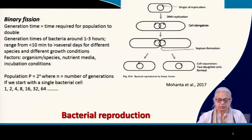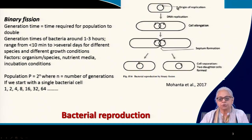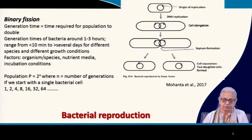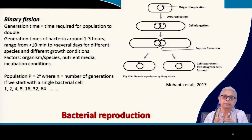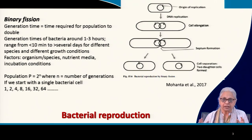We are going to start with bacterial reproduction. We already know that bacteria reproduce by binary fission. In binary fission, we have a single bacterial cell with a double-stranded circular DNA molecule. The first step in the reproduction process is replication of the DNA. There is an increase in the length of the cell and the DNA is replicated, so we now have 2 circular strands. When the cell elongates enough, a septum is formed at the center, leading to separation of the cell into 2 parts, each part having its own double-stranded circular DNA.